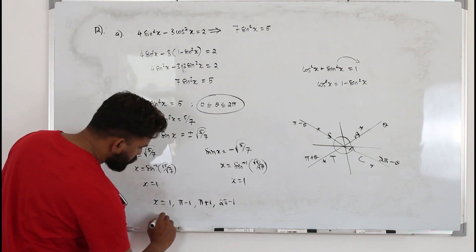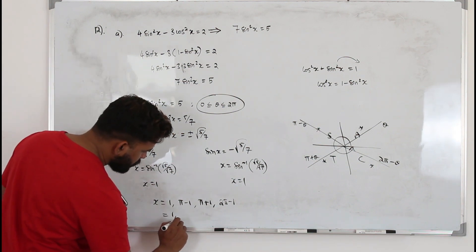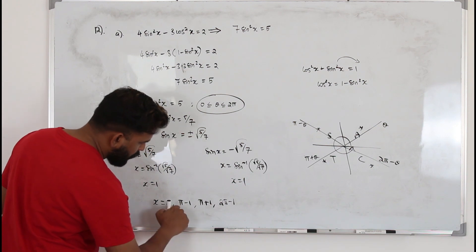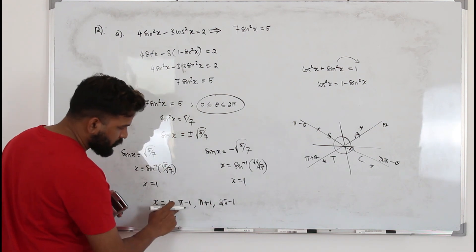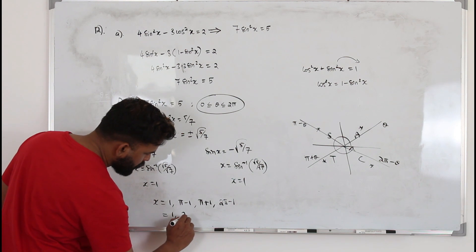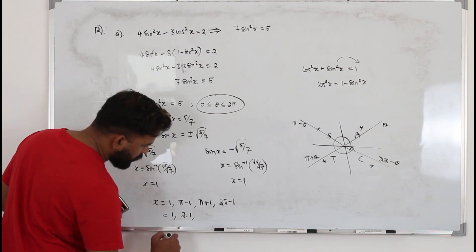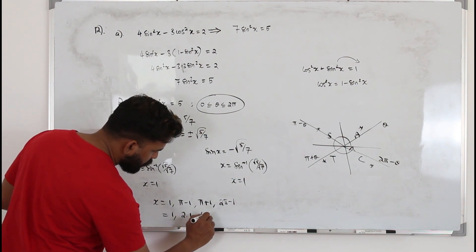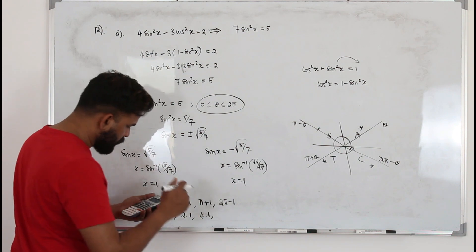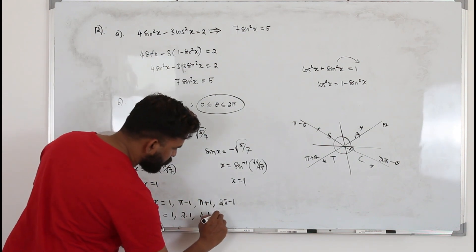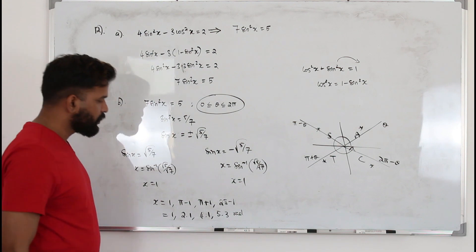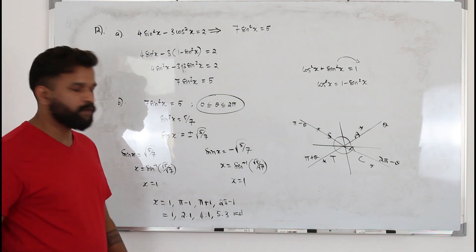The four solutions are: x = 1, x = π − 1 ≈ 2.1, x = π + 1 ≈ 4.1, and x = 2π − 1 ≈ 5.3 radians.